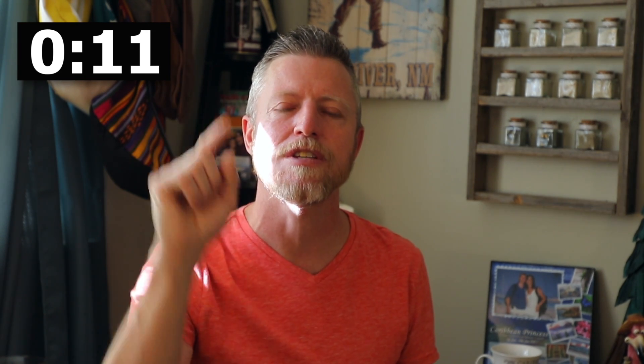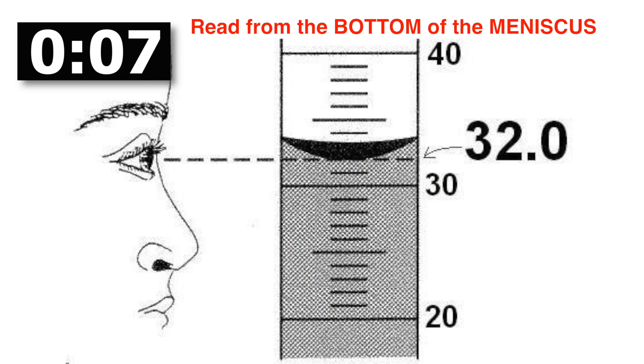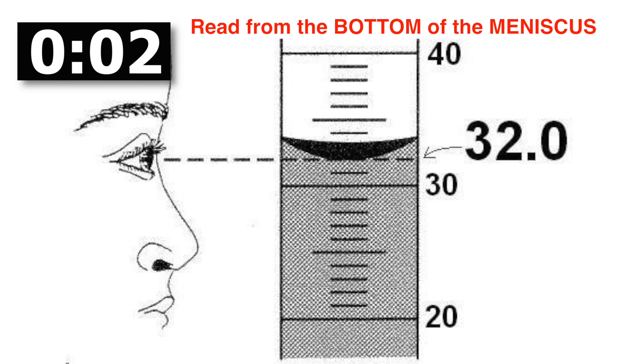Let's talk about the meniscus. The meniscus is the curved line that you see on the graduated cylinder. We always measure from the bottom of the curved line, because gravity is pushing inward on the volume of liquid causing it to sink in, and the surface tension of the water is holding to the sides of the cylinder.